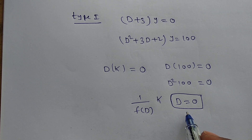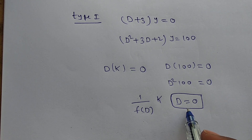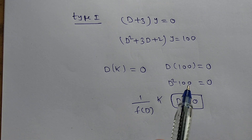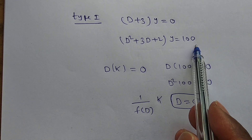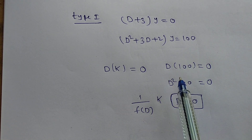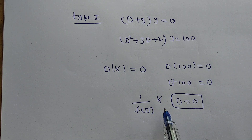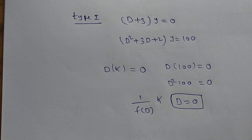If D² is there, then D² is also 0; D³ is also 0; D⁴ is also 0. Whenever a constant is involved — in the form 1/f(D)·k — we put D equal to 0.